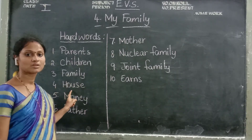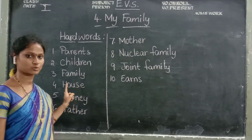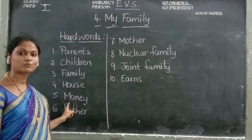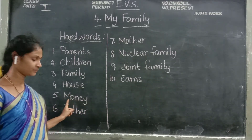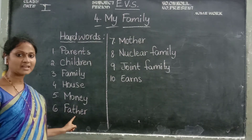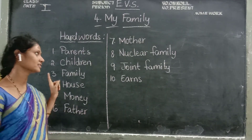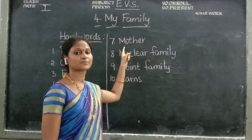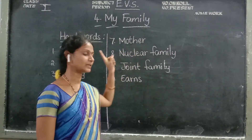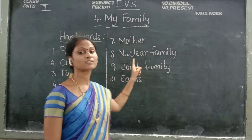Fourth one: house. H-O-U-S-E. House. Fifth one: money. M-O-N-E-Y. Money. Sixth one: father. F-A-T-H-E-R. Father. Seventh one: mother. M-O-T-H-E-R. Mother. Eighth one: nuclear family.